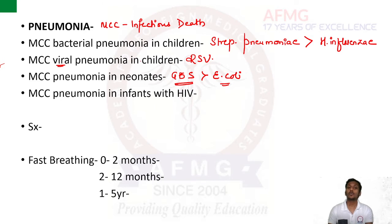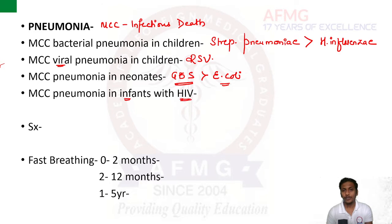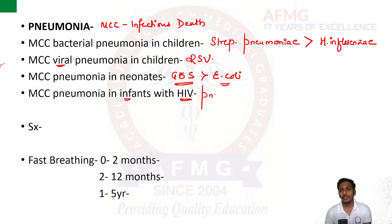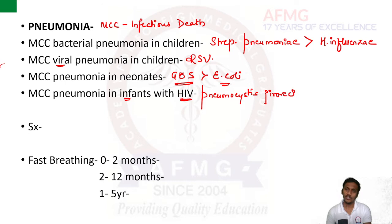If the question is about the most common cause of pneumonia in infants with HIV, please remember the answer remains the same whether it is an infant, child, or adult. If they mention an HIV positive individual, the most common cause of pneumonia worldwide is Pneumocystis jirovecii, irrespective of the age group.